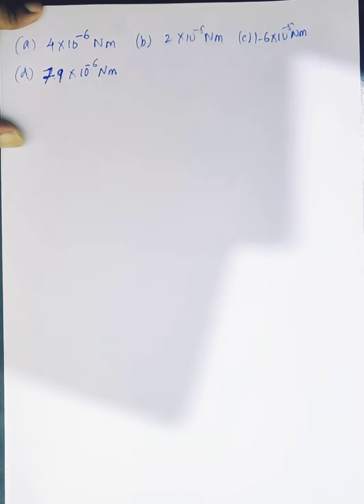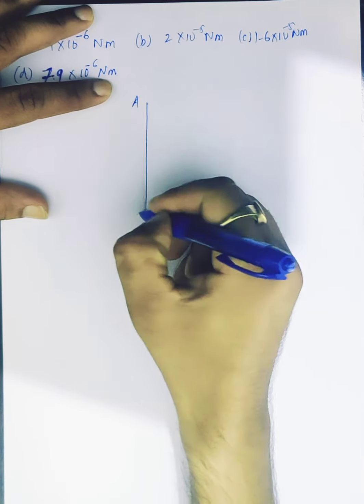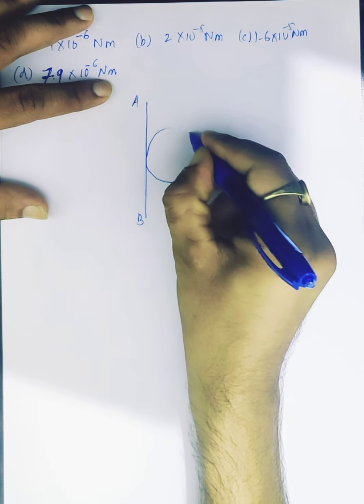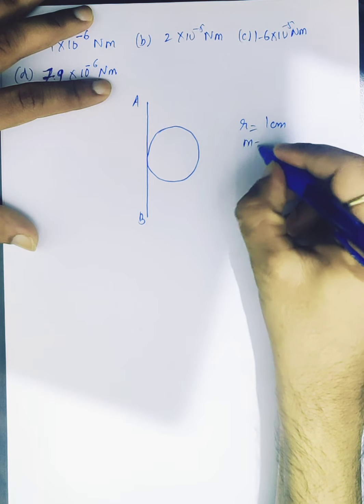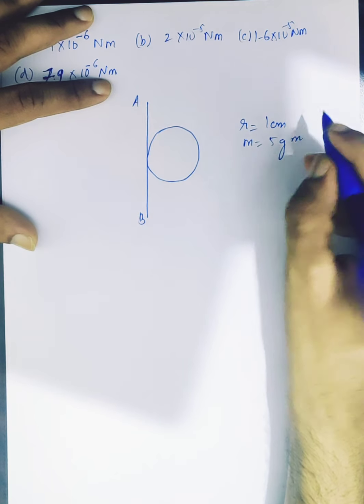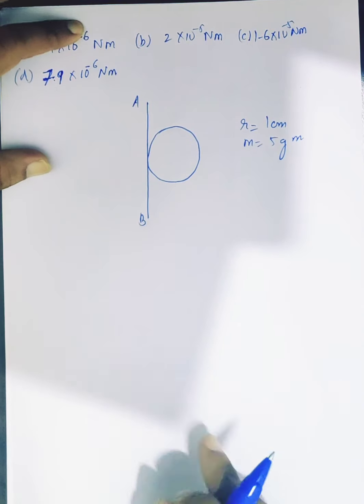So we have a constant torque. Let's see. A stick AB is connected to it and the radius of the coin is 1 centimeter and the mass is 5 grams. The question is that if you initially have a constant torque that will make the system move about this rod 25 rotations per second in 5 seconds.